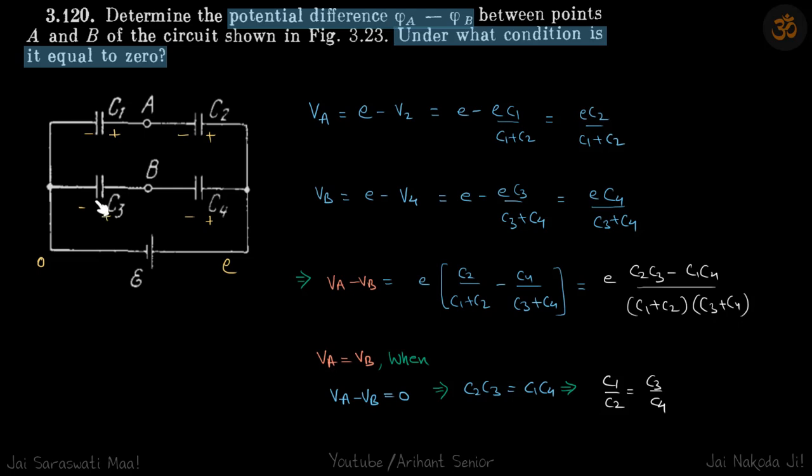If C1 by C2 equals C3 by C4, then the potential of points A and B will be the same. That would be a balanced Wheatstone bridge. If you connect a capacitor in between them, or it doesn't matter what you connect between A and B, no charge is going to flow into that branch because these two are at the same potential.